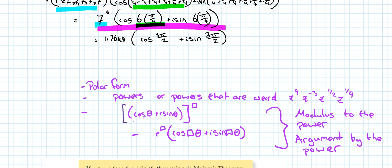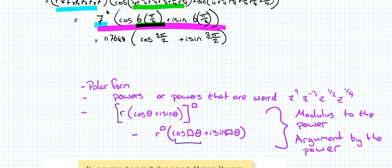So if we have r(cos θ + i sin θ) to the power of n — where r is the modulus — what we end up doing is putting the modulus to that power and multiplying the argument by the power. Modulus to the power, argument times the power. That's the key point.